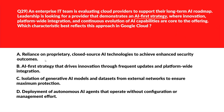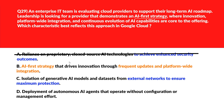Let's look at the next question. Option A says reliance on proprietary closed-source AI technologies to achieve enhanced security outcomes. Closed-source reliance limits openness and doesn't reflect Google Cloud's innovation focus — wrong answer. Option B says an AI-first strategy that drives innovation through frequent updates and platform-wide integration.